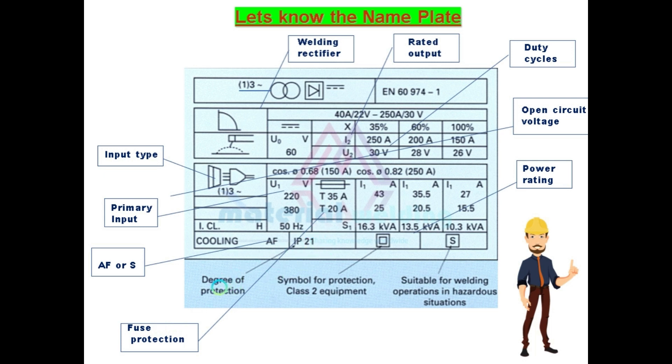This is degree of protection. IP23 or IP21 will be here. Symbol for protection class equipment. And this is suitability for welding operation in hazardous situations. This area is for the duty cycle.